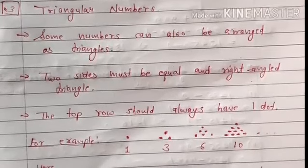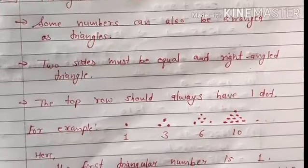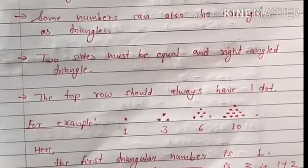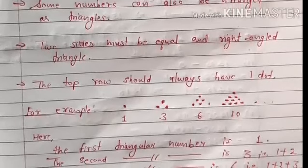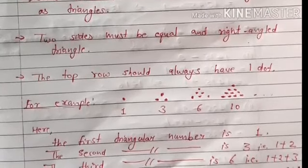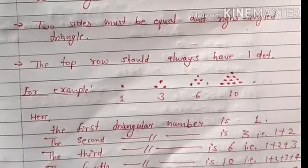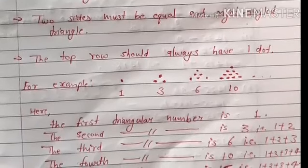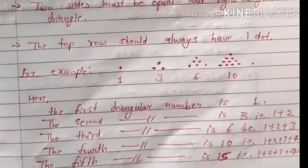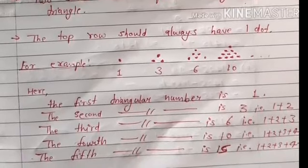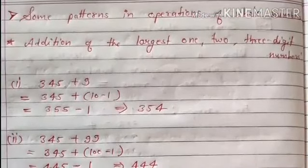Triangle ऐसा start होना चाहिए कि top row में हमेशा एक ही dot बचे। जैसे: 1 को एक dot से, 3 को नीचे two dots और ऊपर one dot से, 6 को नीचे three dots, फिर two dots, फिर one dot से दिखाएंगे। हमेशा ऊपर जाते-जाते single dot रहनी चाहिए। इसी तरह 15 को भी लिख सकते हैं — इन्हें ही triangular numbers कहते हैं।